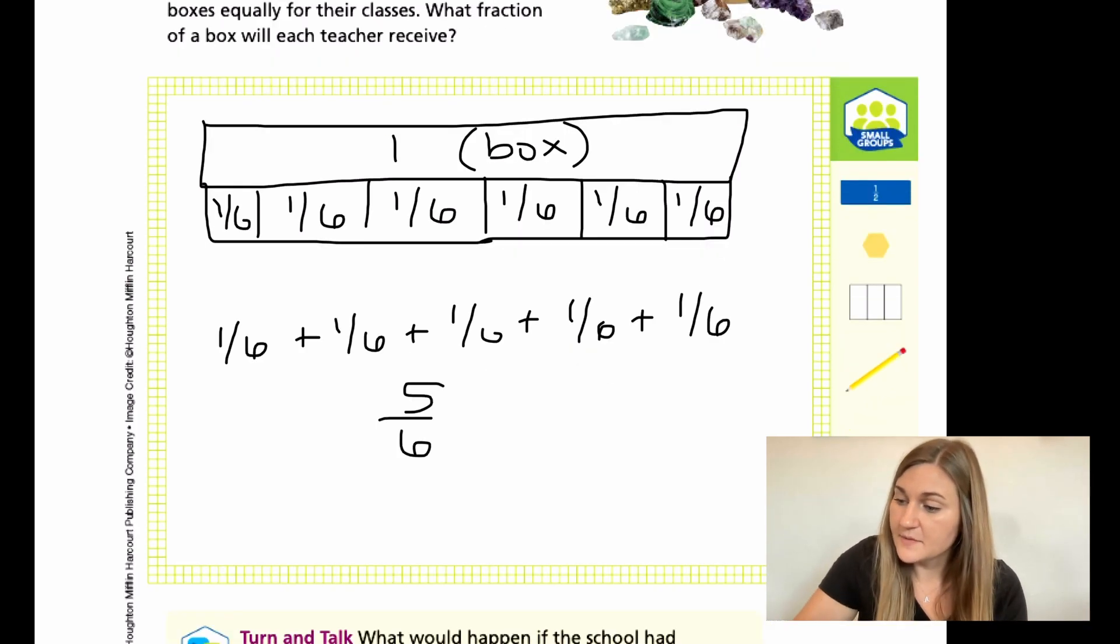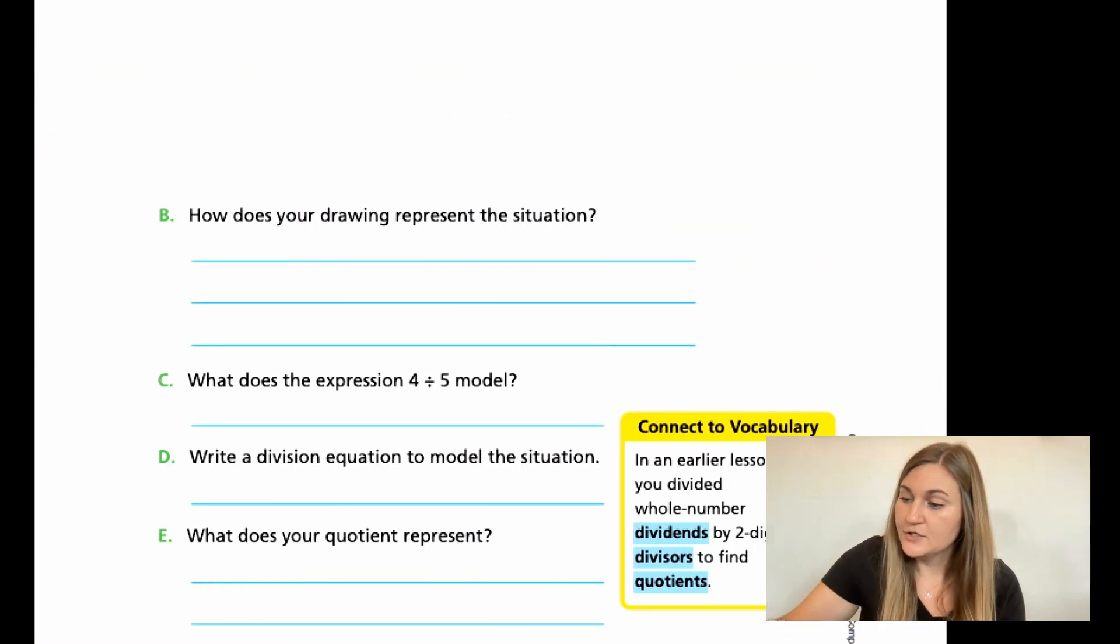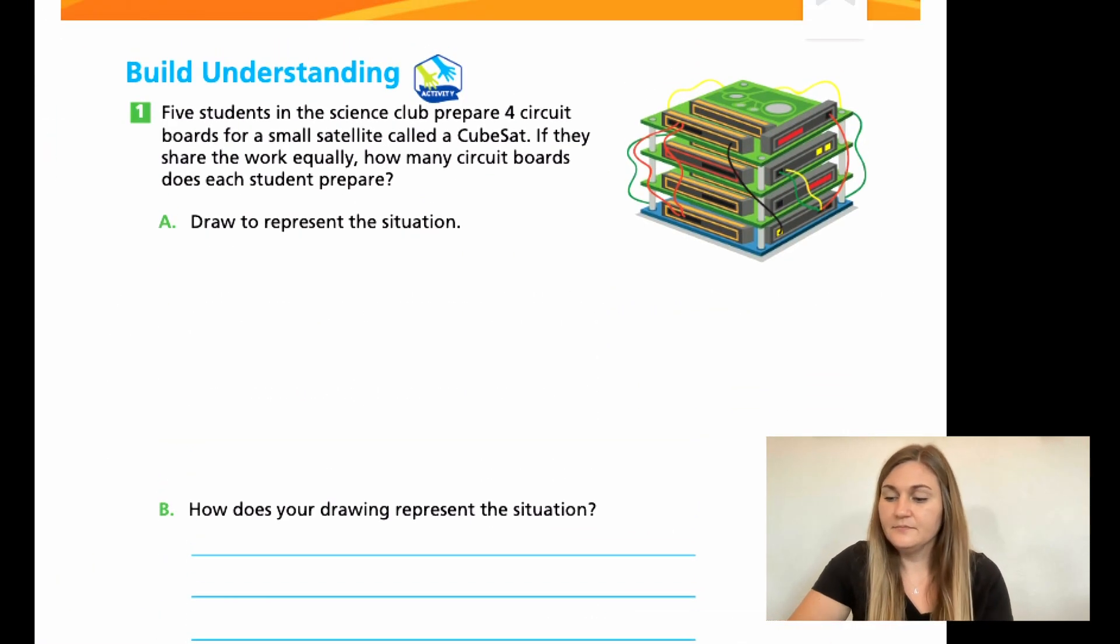So let's go ahead and flip the page to 240. It says five students in the science club prepare four circuit boards for a small satellite called a CubeSat. If they share the work equally, how many circuit boards does each student prepare? So for A, I want you to do the same thing that I did in the prior question and just go ahead and draw to represent what's happening. So draw the circuit boards and show what part each student is working on for that circuit board.